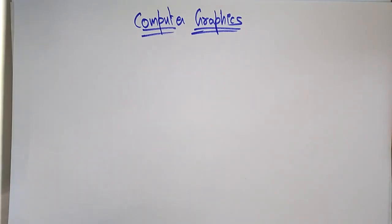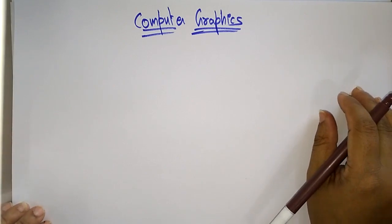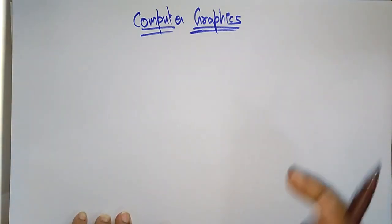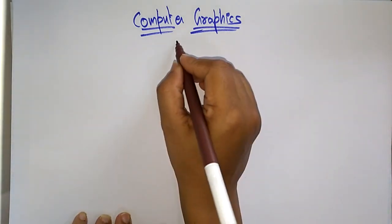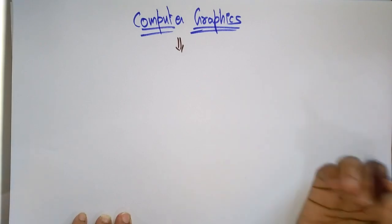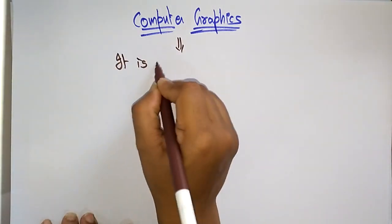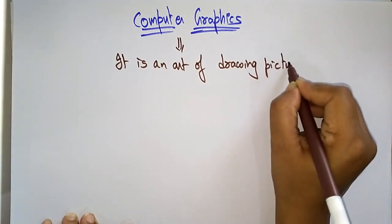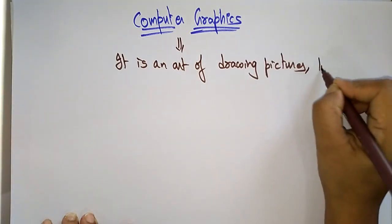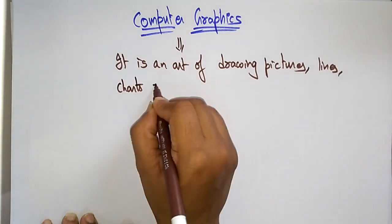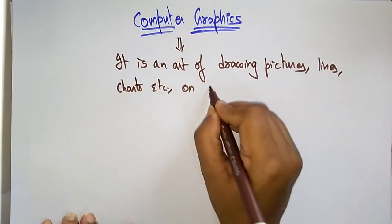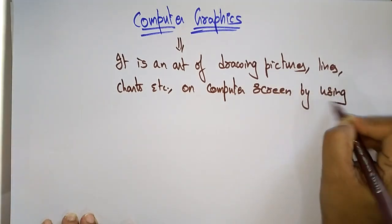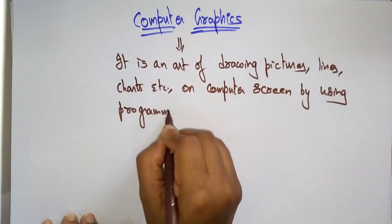Welcome back students. In this video I want to give an introduction to computer graphics. So what is computer graphics? Computer graphics is an art of drawing pictures, lines, or charts on a computer screen by using a programming language.